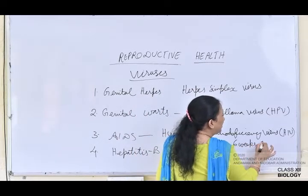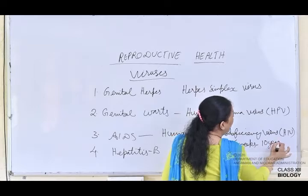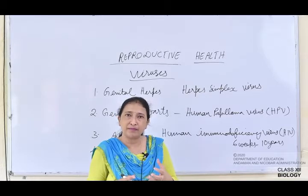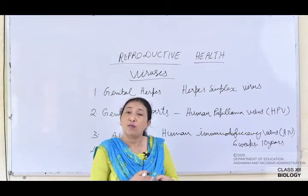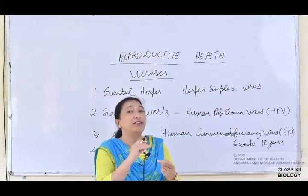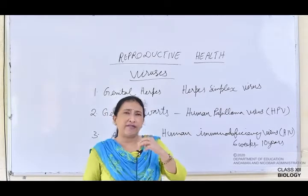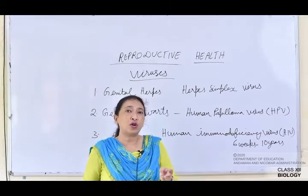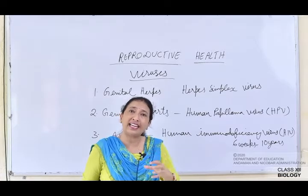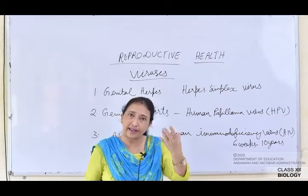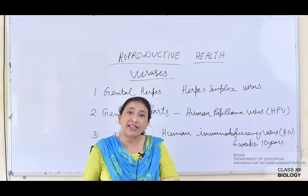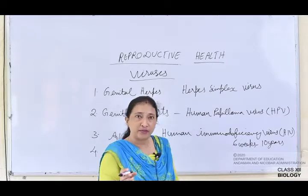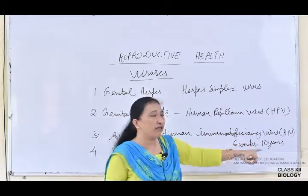For HIV, symptoms can sometimes appear within six weeks, or it can take up to 10 years for the disease to be caught. Symptoms include prolonged diarrhea, weight reduction, and prolonged recurrent fever — the person keeps getting fever even when taking antibiotics. These are characteristic symptoms of Human Immunodeficiency Virus.